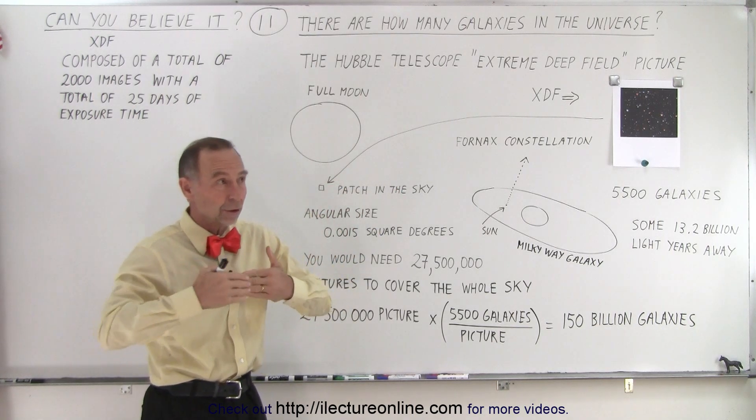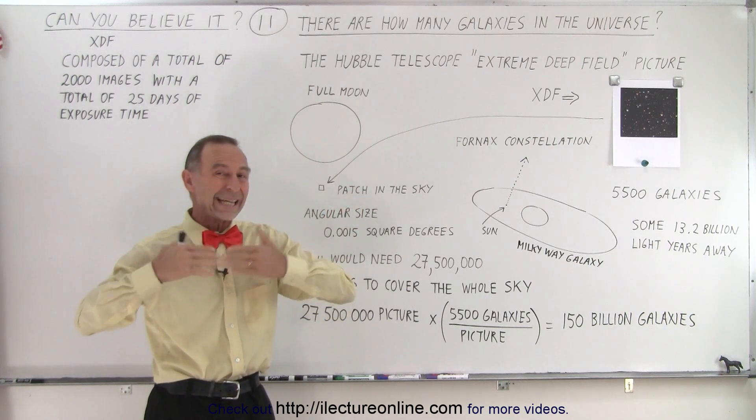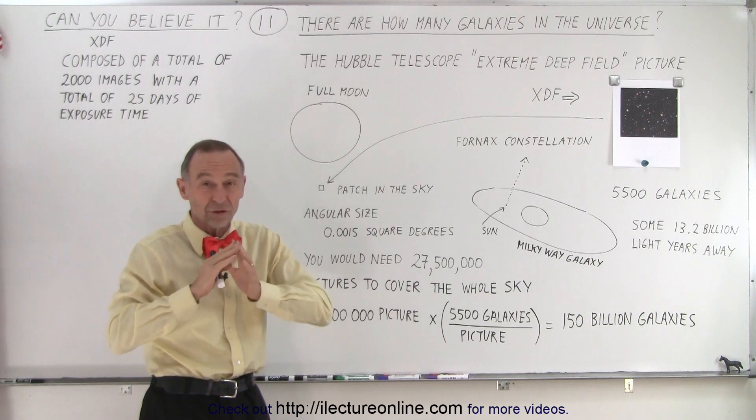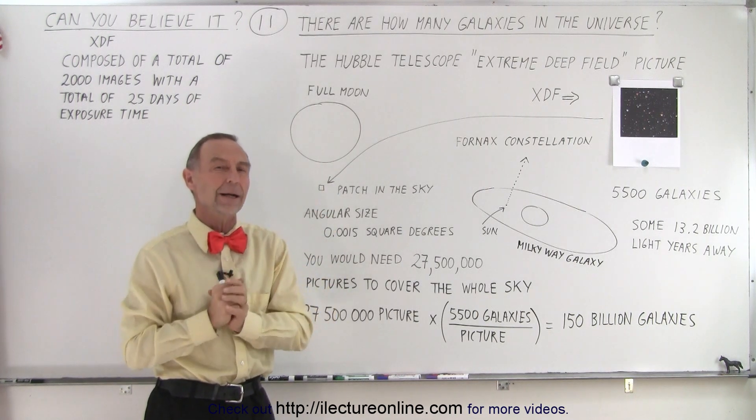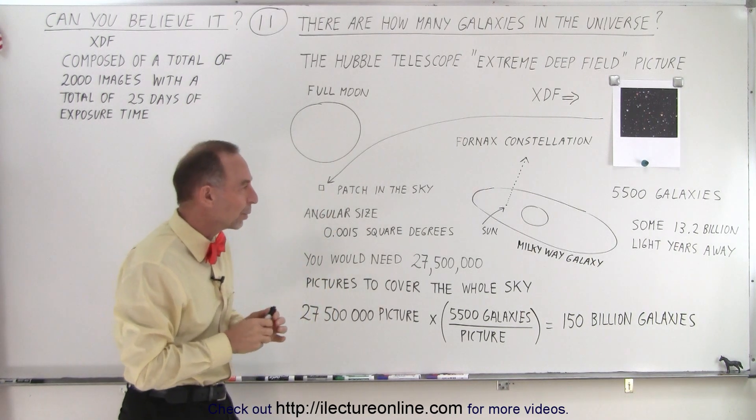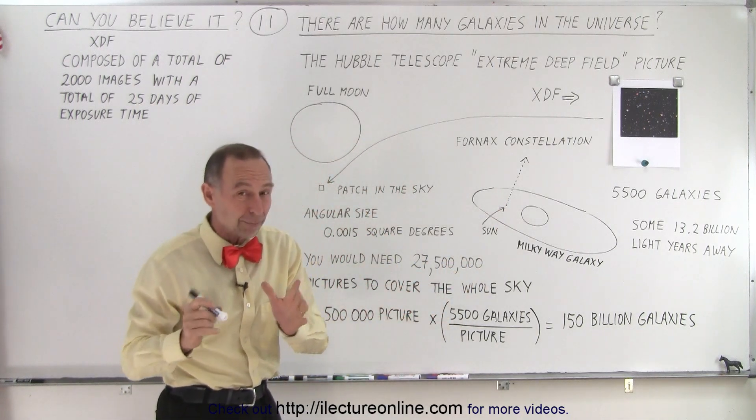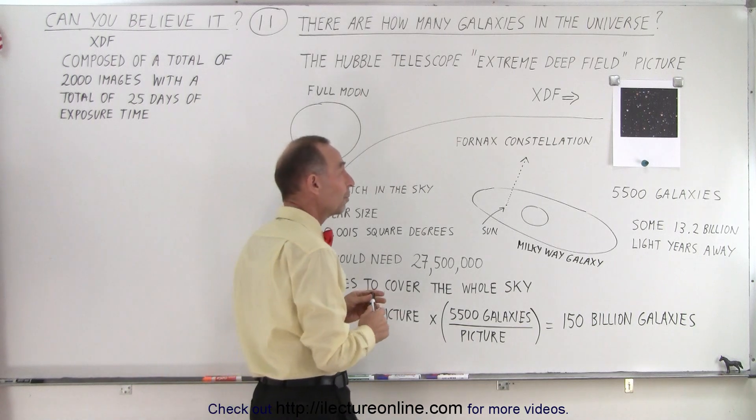Of course, the problem is that when you look in all different directions, there's many galaxies blocking the way to the galaxies behind them. So you want to look somewhere where there's not many galaxies nearby. So what we did was we took a picture, actually about 2,000 pictures, and assembled them all together with the Hubble Space Telescope.